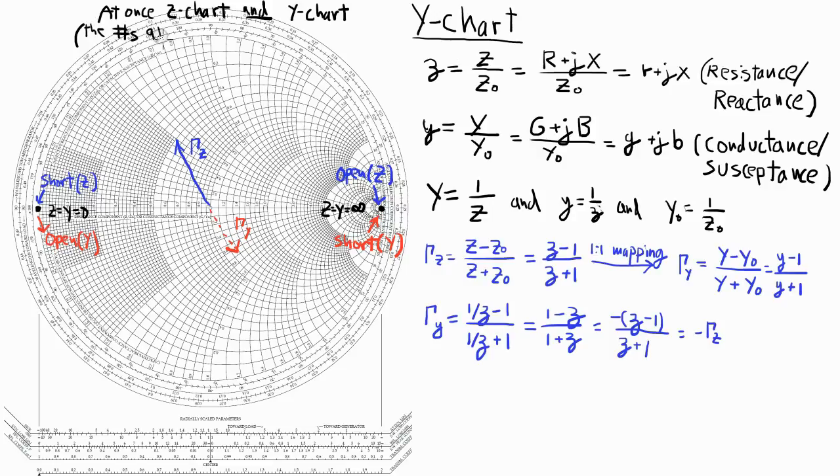So the numbers on the Smith chart, whether it's a y chart or a z chart, are identical. But the physical meaning of these numbers is different. So as we just saw, the rightmost point on the Smith chart is the point infinity, whether it's on the z chart or the y chart. But infinity implies an open on the z chart and implies a short on the y chart.